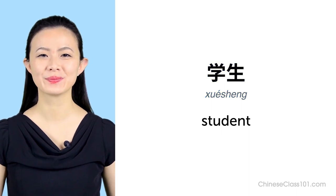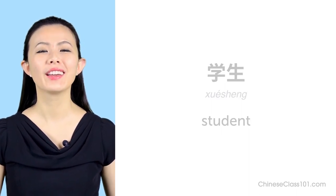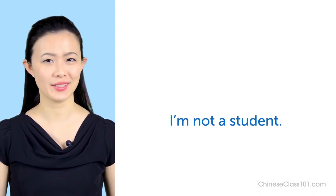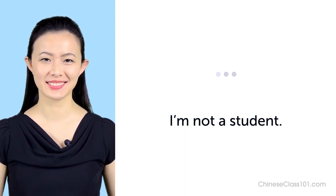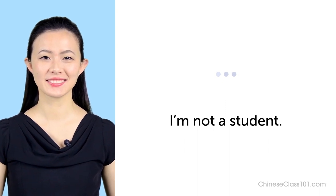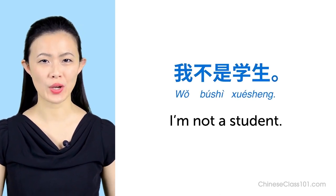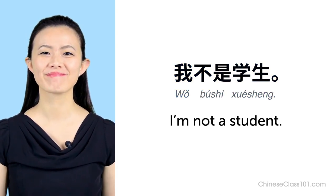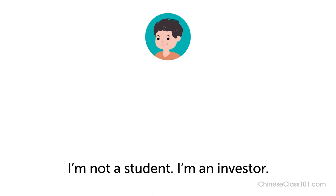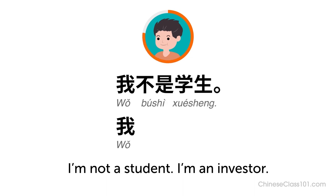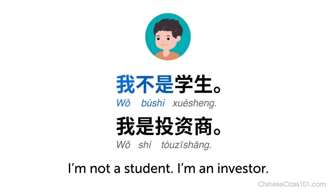Do you remember how to say Student? 学生. Do you remember how Joan says I'm not a student? 我不是学生. And do you remember how Joan says I'm not a student, I'm an investor? 我不是学生，我是投资商.